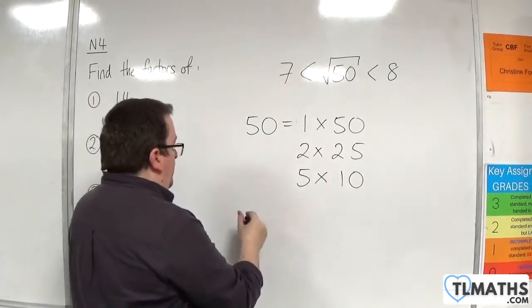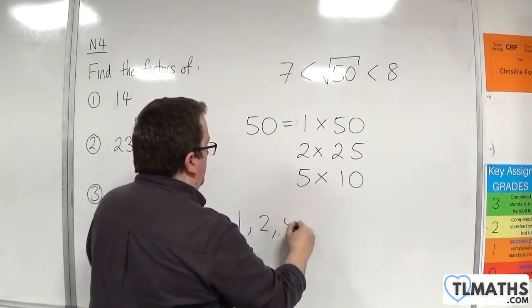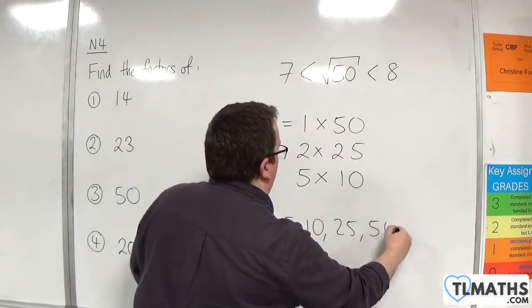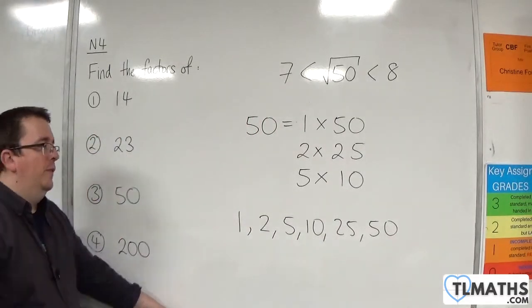So, the factors of 50 are 1, 2, 5, 10, 25, and 50.